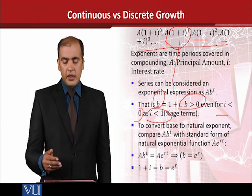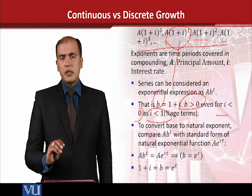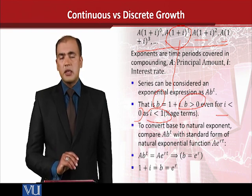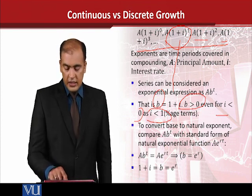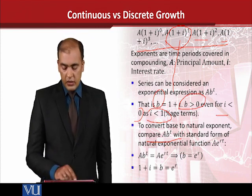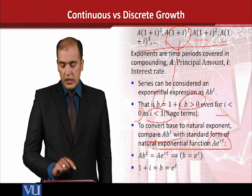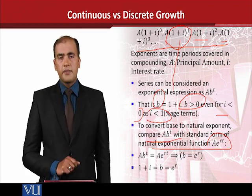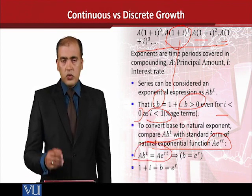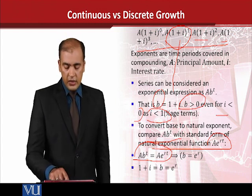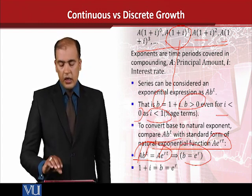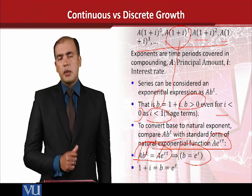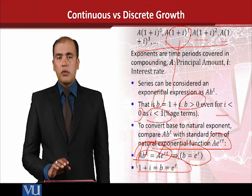So, after understanding this, we can go ahead and transform this usual base into the natural base, which as you know is represented by E. For that you can refer to Alpha C. Chiang's book, section 10.4, which we have explained a little. It says that we will compare A·B^t with the natural exponent function, whose standard form is highlighted. When we compare them — as we saw, because we want to create an equivalence and bring in E — A cancels with A and T with T, leaving us with this term. This term we can now equate to 1 plus I, and B equals 1 plus I as well. We have written all three things together and noted this equivalence.